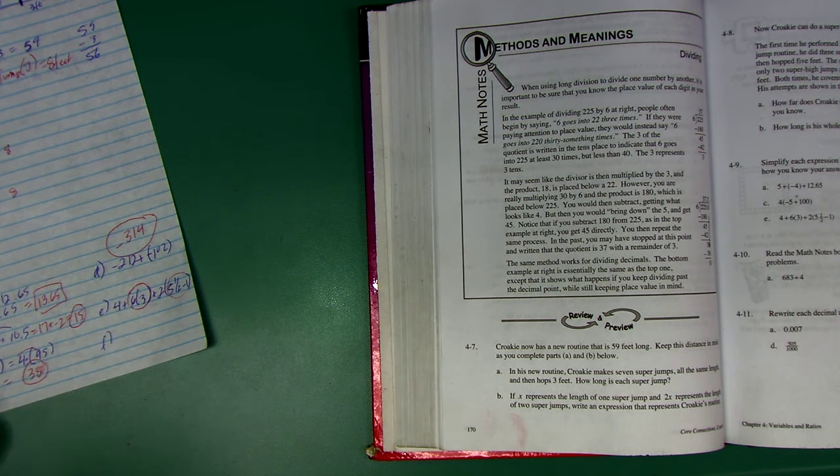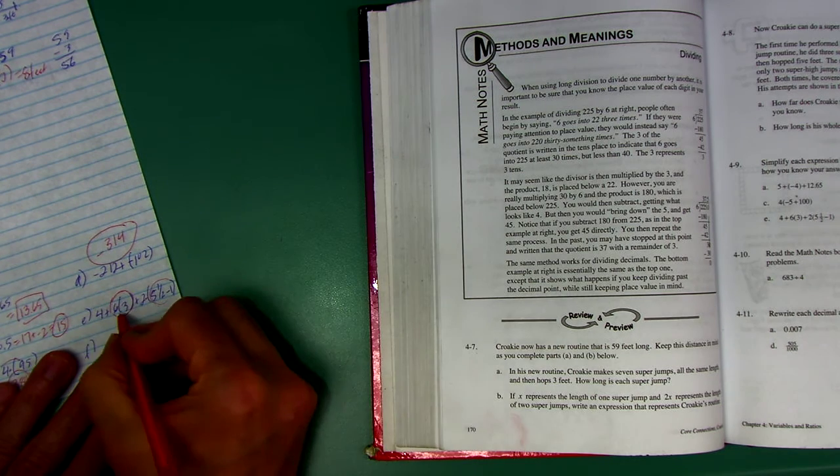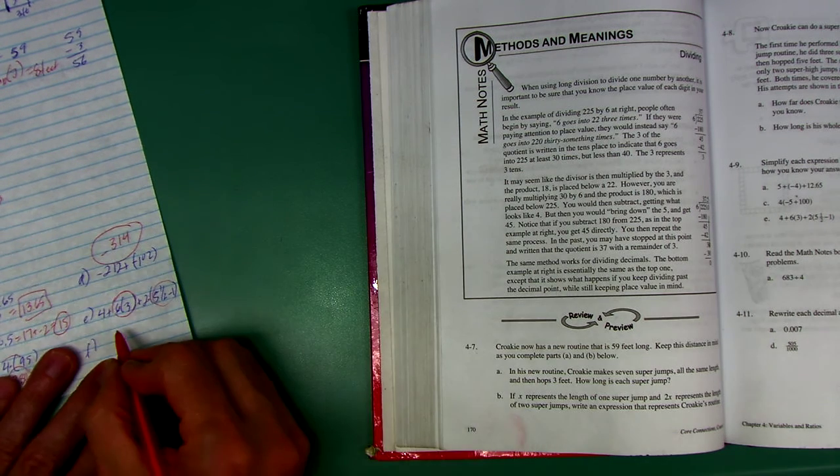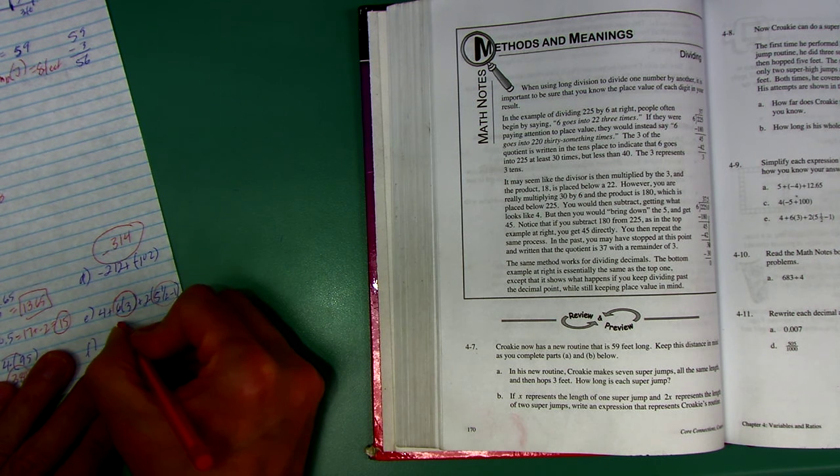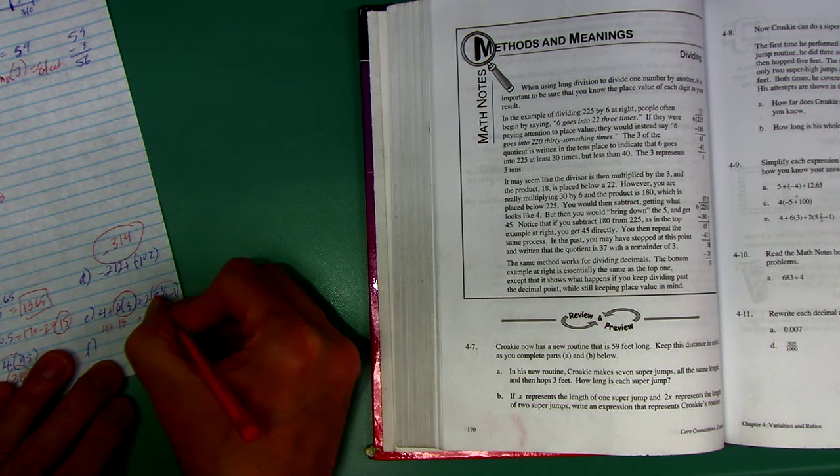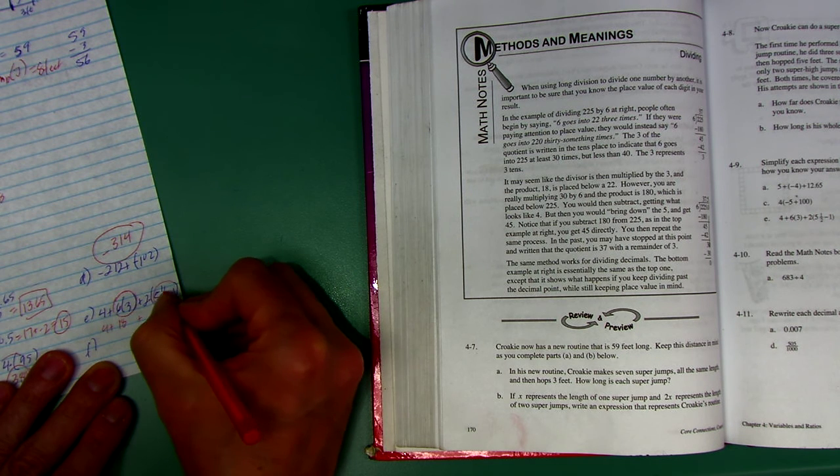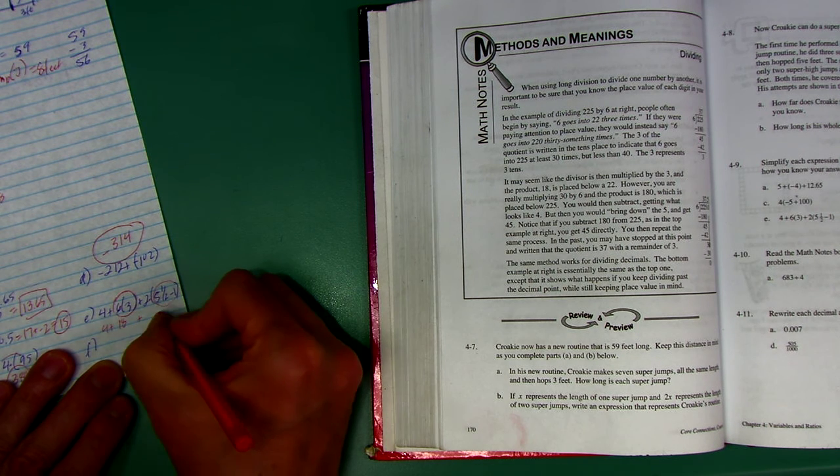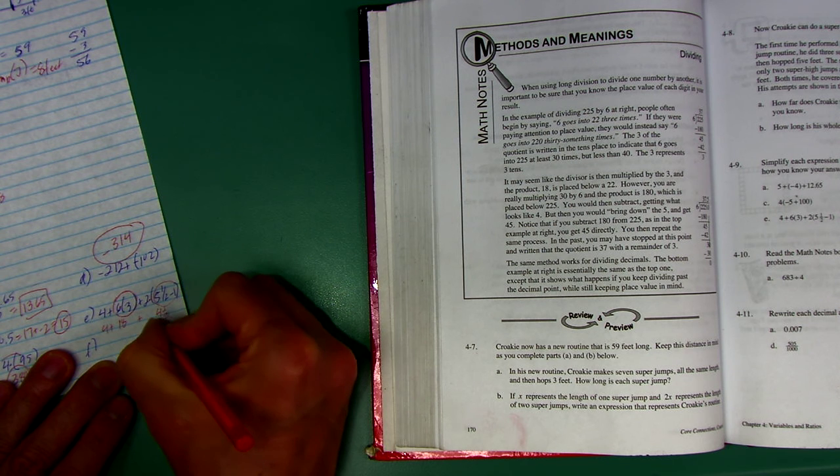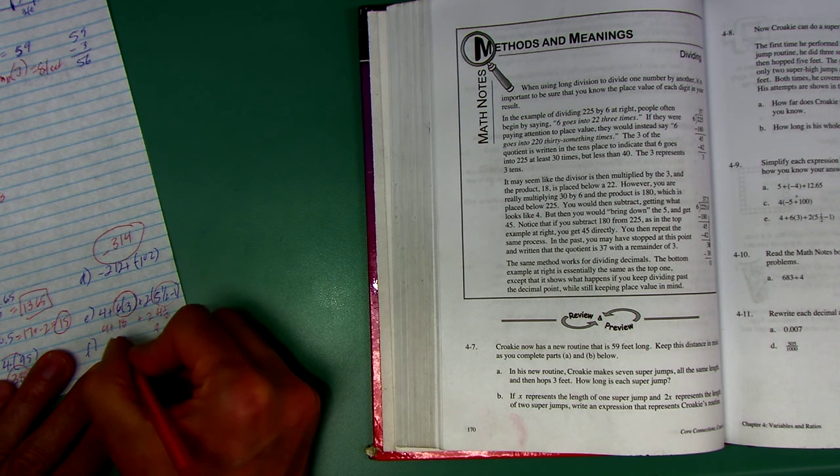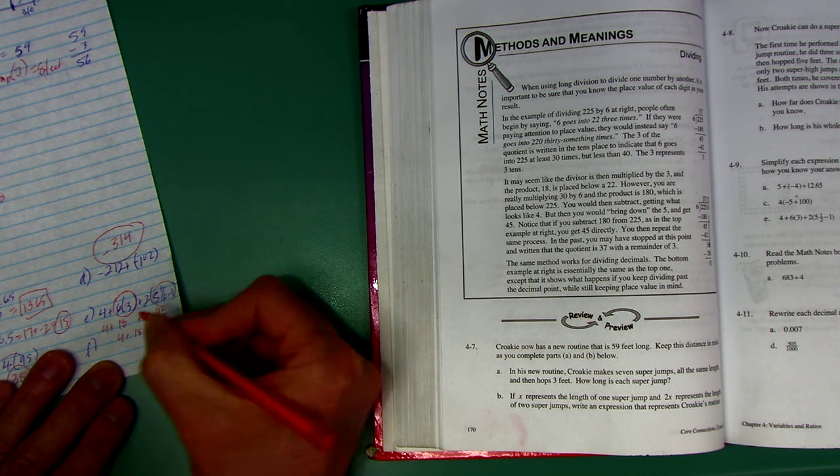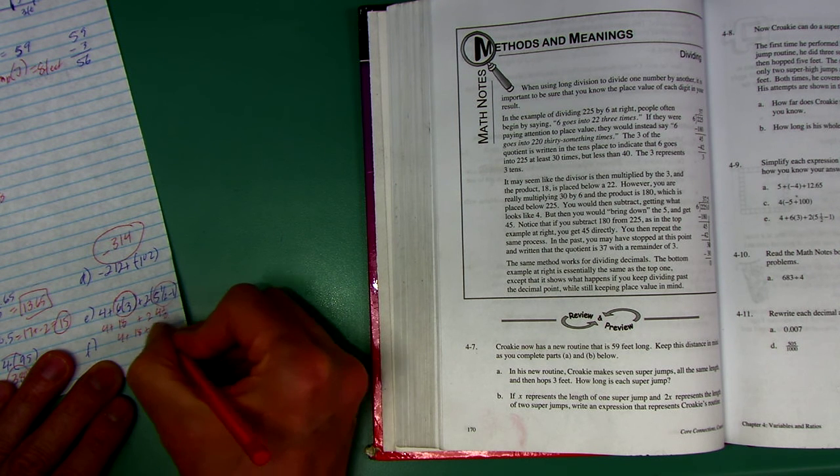I said to do this first and this first on E, so 6 times 3 is 18, so 4 plus 18 plus 2 times, I've got to do this parenthesis, 5.5 minus 1 is 4.5, and I've got to go 2 times that. 2 fours is 8, 2 halves is 1 whole, so that's 9. 4 plus 18 plus 9, that's 22 and 9, 31 for E.